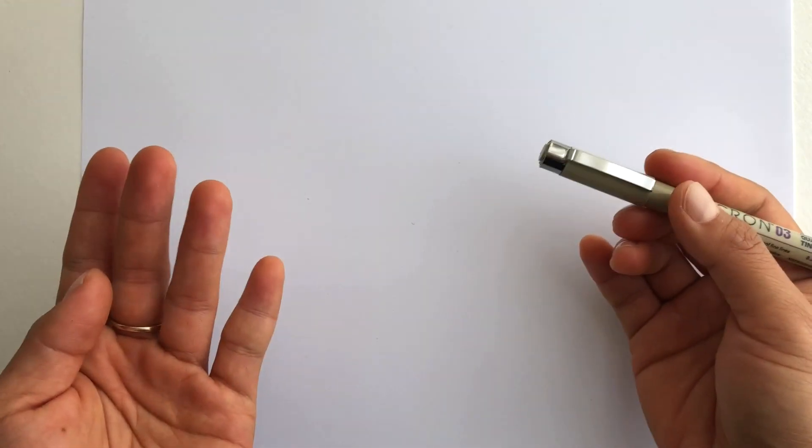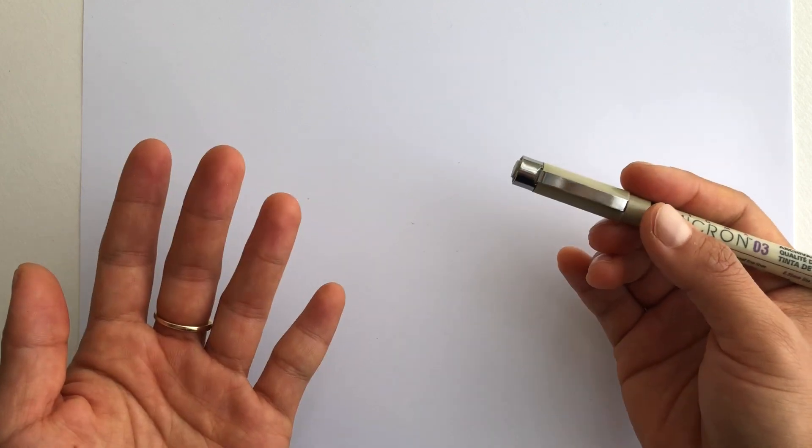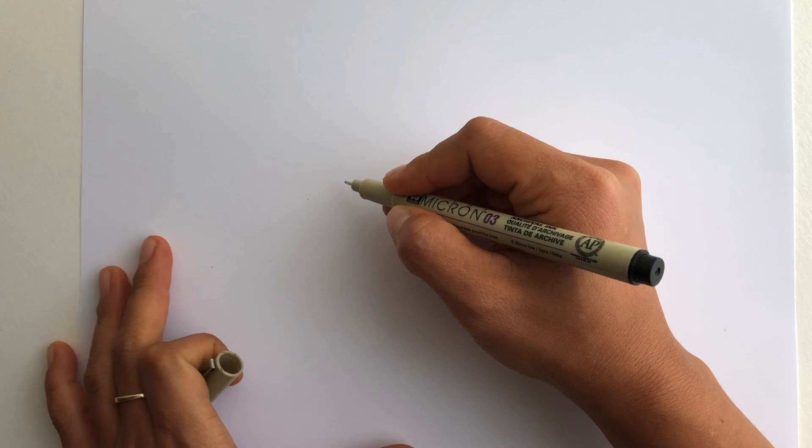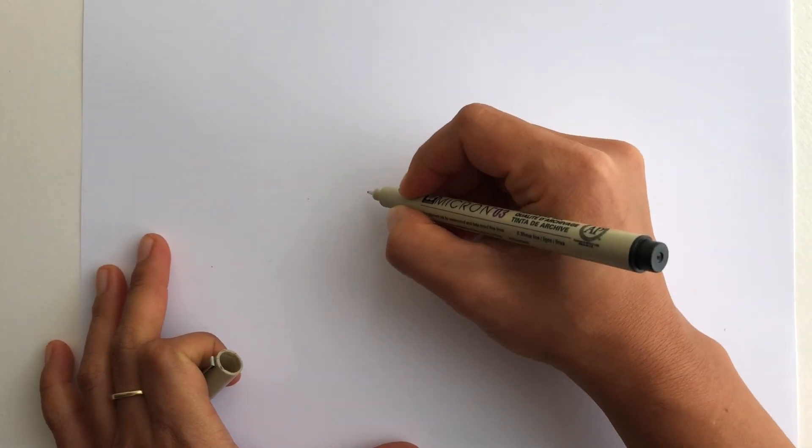So the three shapes are a teardrop. Basically this shape, all right.